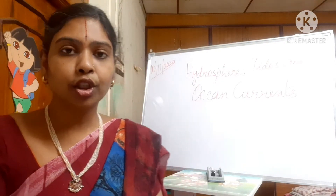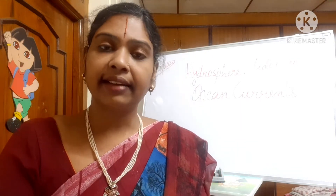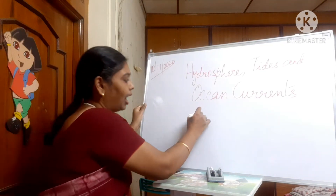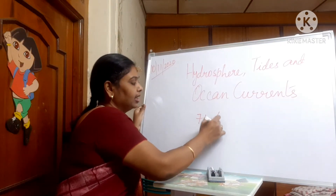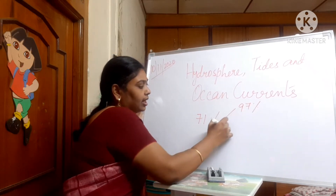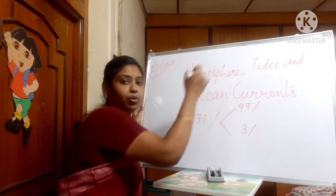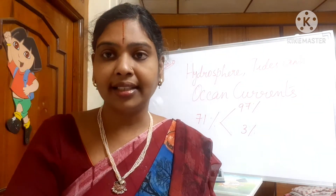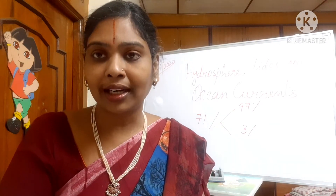Coming to the next topic — distribution of land and water. We have seen that 71% of the earth's surface is filled with water. Out of that 71%, 97% is liquid water and the other 3% is in the form of ice, in the form of polar caps.